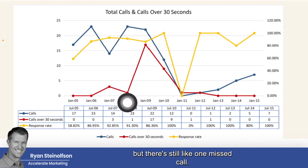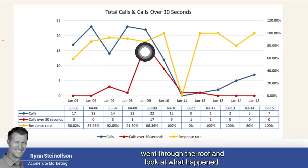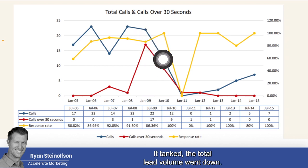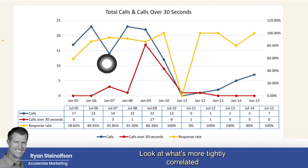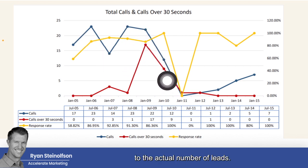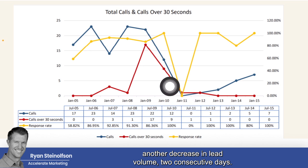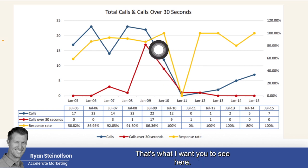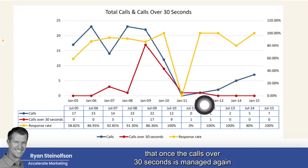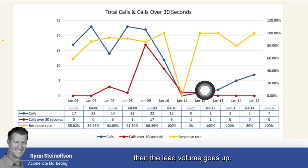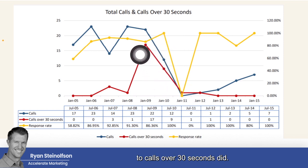Then the calls answered over 30 seconds went through the roof, and look at what happened — it tanked. The total lead volume went down, all while response time is going up and hovering. Look at what's more tightly correlated to the actual number of leads. Again, another day where there's a bunch of calls answered over 30 seconds on June 10th, and then another decrease in lead volume. Two consecutive days basically takes you to almost zero leads. Once the calls over 30 seconds is managed again, the lead volume goes up. You can see the response rate went way down here, but it didn't respond the way that lead volume responded to calls over 30 seconds. Calls over 30 seconds are a much better predictor of overall lead volume than just the response rate percentage from the MCC account.